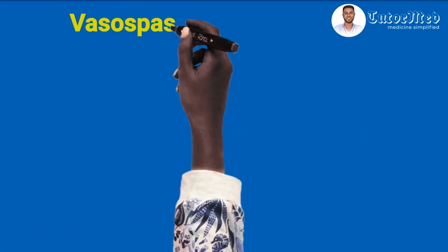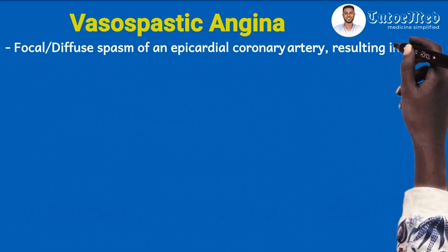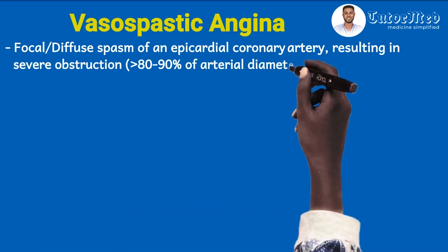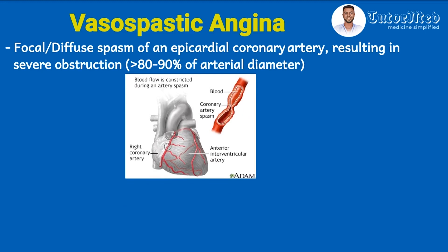We begin with vasospastic angina, formerly called Prinzmetal angina or variant angina. In patients predisposed to this condition, they have a focal or diffuse spasm of their coronary artery, resulting in severe obstruction — the spasm occludes over 80 to 90 percent of the artery's diameter, meaning only 10 percent of the lumen is available for perfusion, causing significant myocardial ischemia. This diagram illustrates how severe the coronary artery spasm can be.